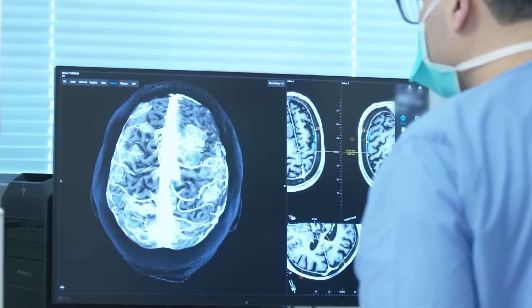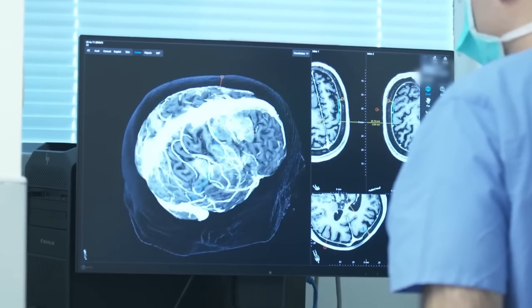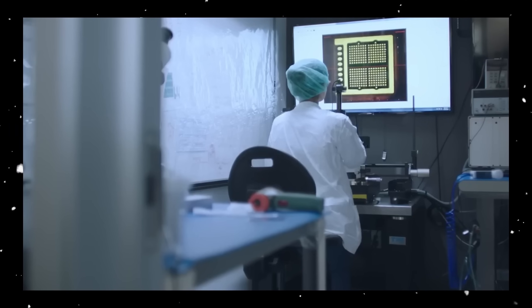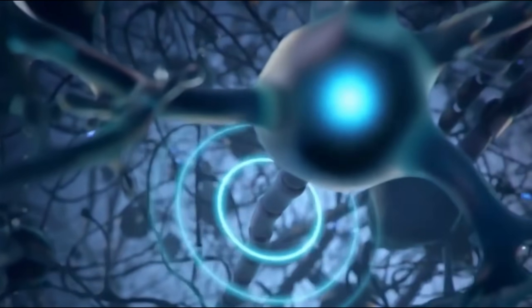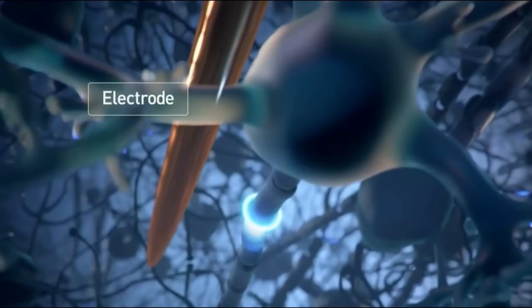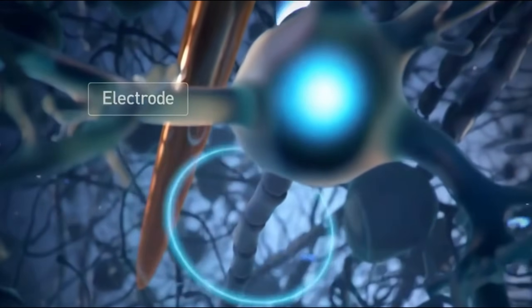Neuralink had to cancel their plans to do this surgery in June because of some medical issues, but they ended up doing it quietly and only talked about it recently. Elon Musk was really pleased with how the surgery went. He said they have 400 working electrodes now, which isn't all of them, but it's still a lot.